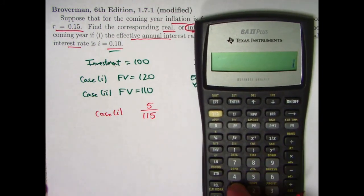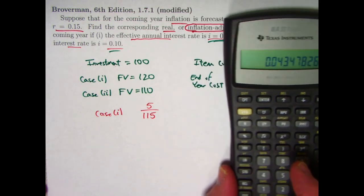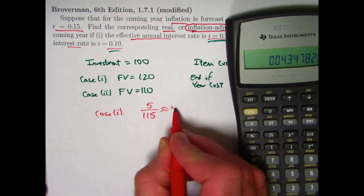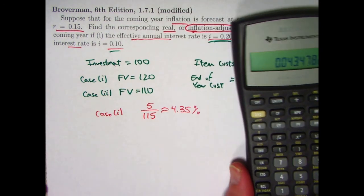So that's going to be 5 divided by 115. That's about 4.35 percent. That's your real rate of interest, or real rate of return in case one.